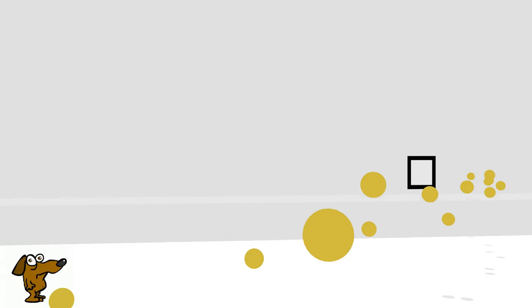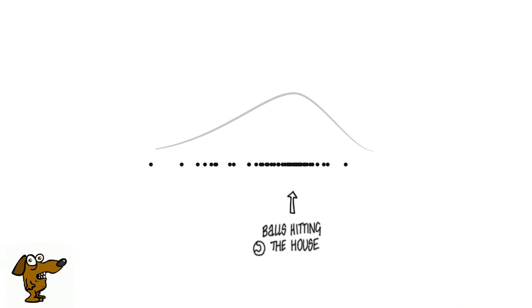Now let's cover up hole number one. This is the distribution we can expect from balls hitting the house.